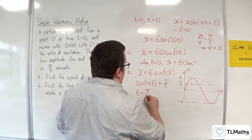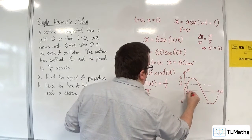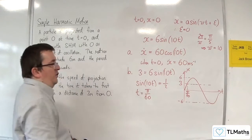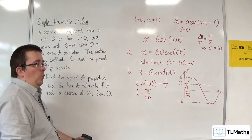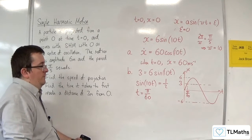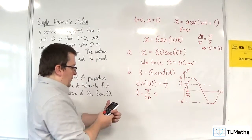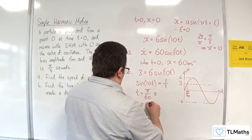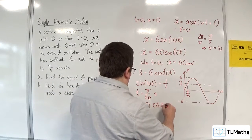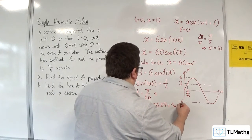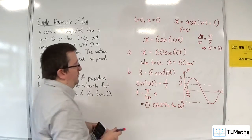And we get π over 60, so t is going to be equal to π over 60, and that's going to be the first time at which we're 3 metres away from the origin, or from O. So I'm just going to convert that into decimal form, so 0.0524 seconds to 3 significant figures.